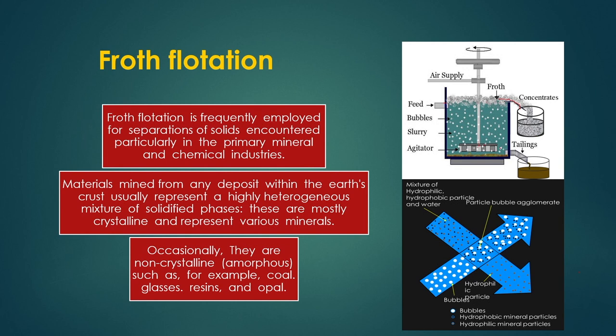The hydrophilic particles, which do not attach to the bubble surfaces, come out at the bottom as tailings. Slurry is fed into the system and supplied to the distributor to form bubbles. Sometimes the arrangement to supply gas can differ — it may come from a compressor at the bottom or through a pipe from the upper part of the vessel.